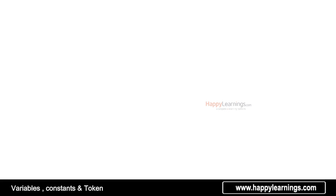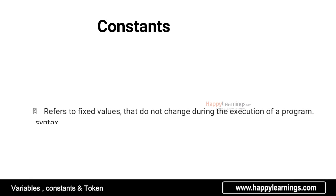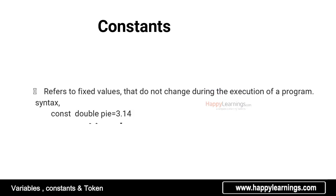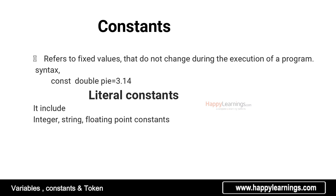This is constants. Constants are fixed values. In the programming execution, the values are not changed. We can use the constants with the keyword: const double pi = 3.14. In the programming execution, the values are not changed. It is constant.